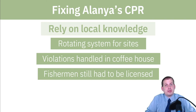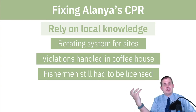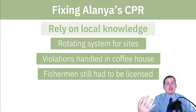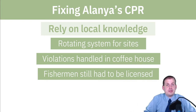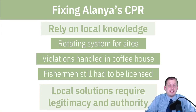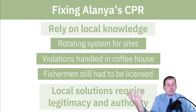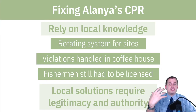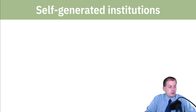It was all self-policed and self-enforced. Fishermen still had to be licensed, but you went through the village and the guild of fishermen rather than the Turkish government. It worked — they fixed the overfishing, it was a fairly equitable system with equal access, people were happy, and they had systems to punish those who defected. The key was that this local solution had legitimacy and authority. The fishermen subjected themselves to the authority of the other fishermen because they all knew each other — it was a community-based effort.